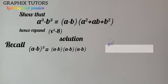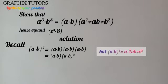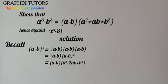Now you know that a minus b times a minus b will give us (a minus b) squared. So we now have a minus b in bracket multiplied by (a minus b) squared. If I expand (a minus b) squared, I'll be having a minus b in bracket multiplied by a square minus 2ab plus b square.